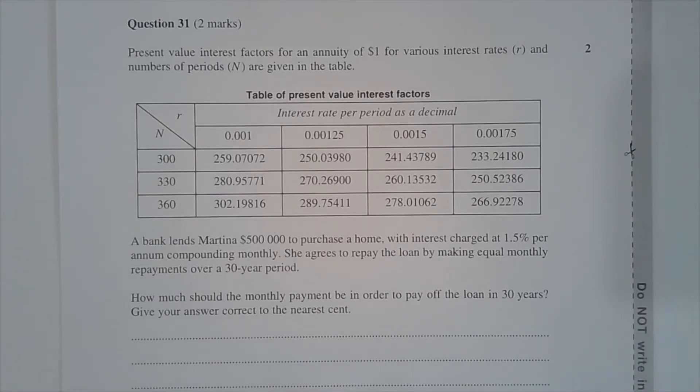A bank lends Martina $500,000 to purchase a home with interest charged at 1.5% per annum compounding monthly. She agrees to repay the loan by making equal monthly repayments over a 30-year period.